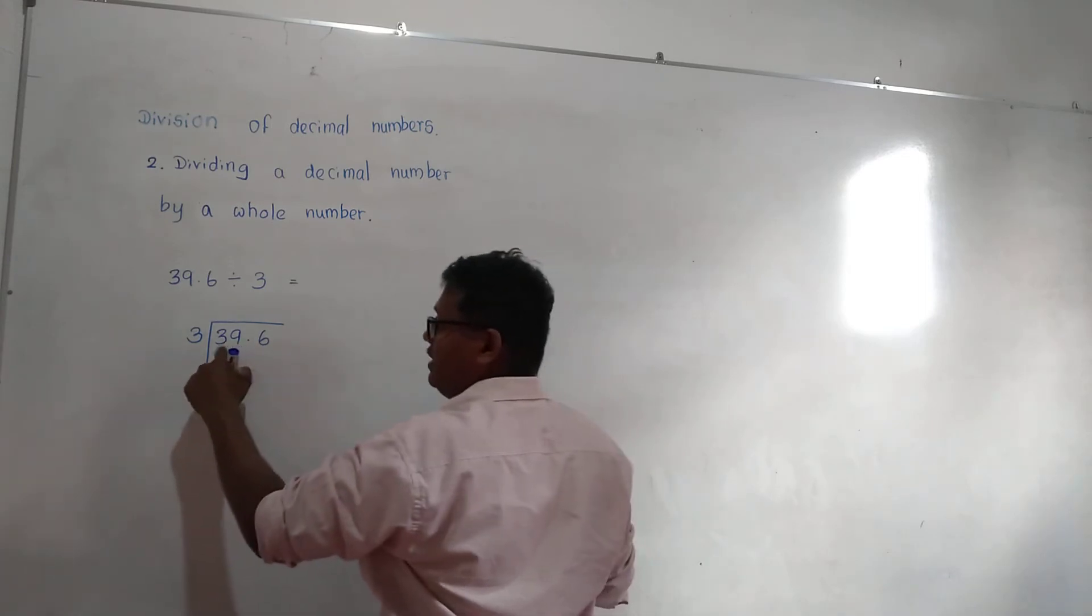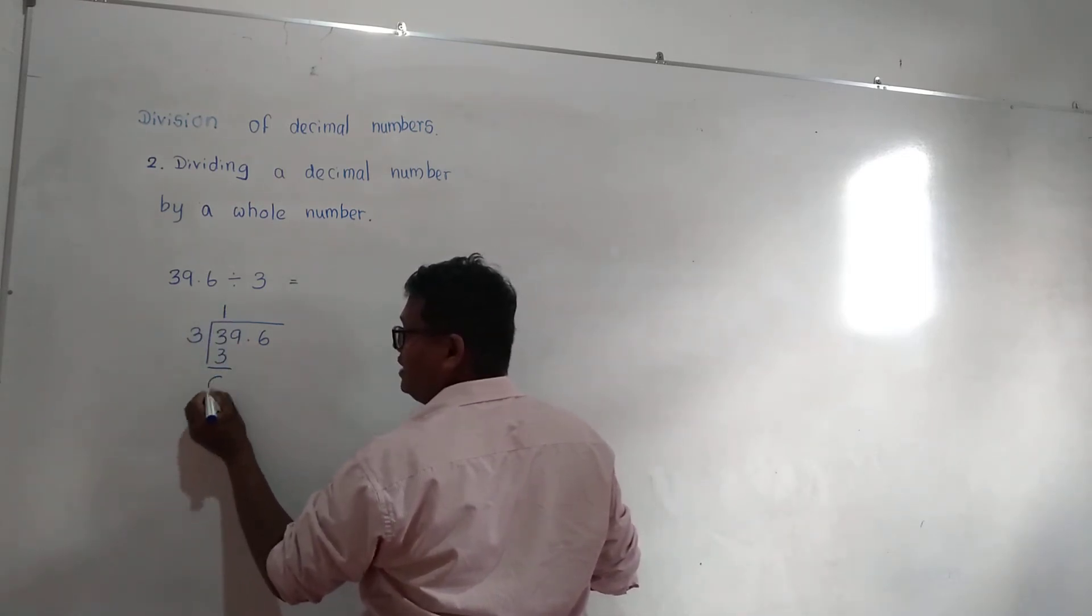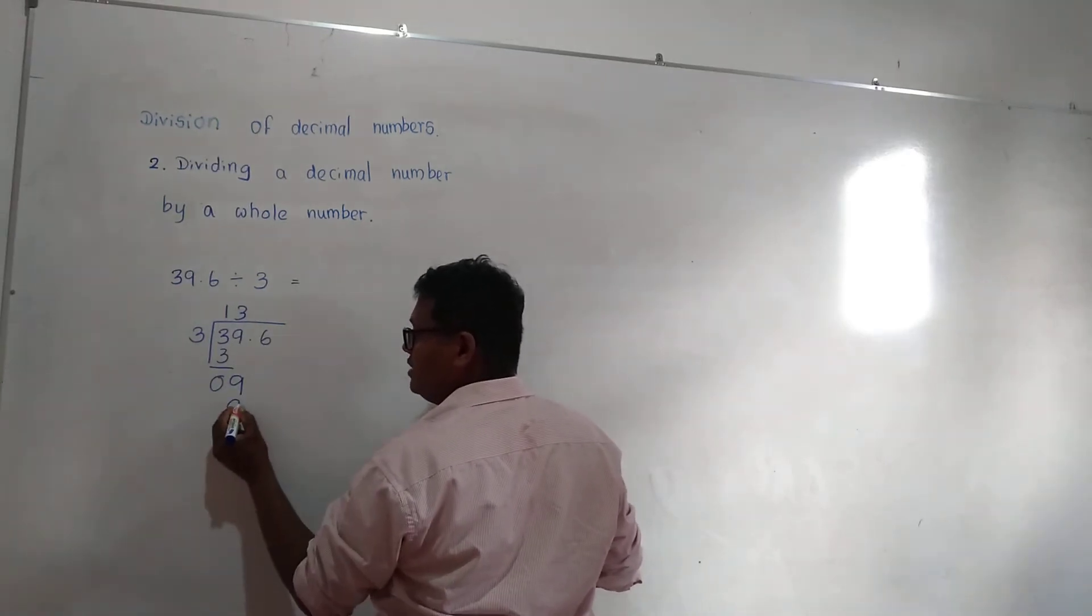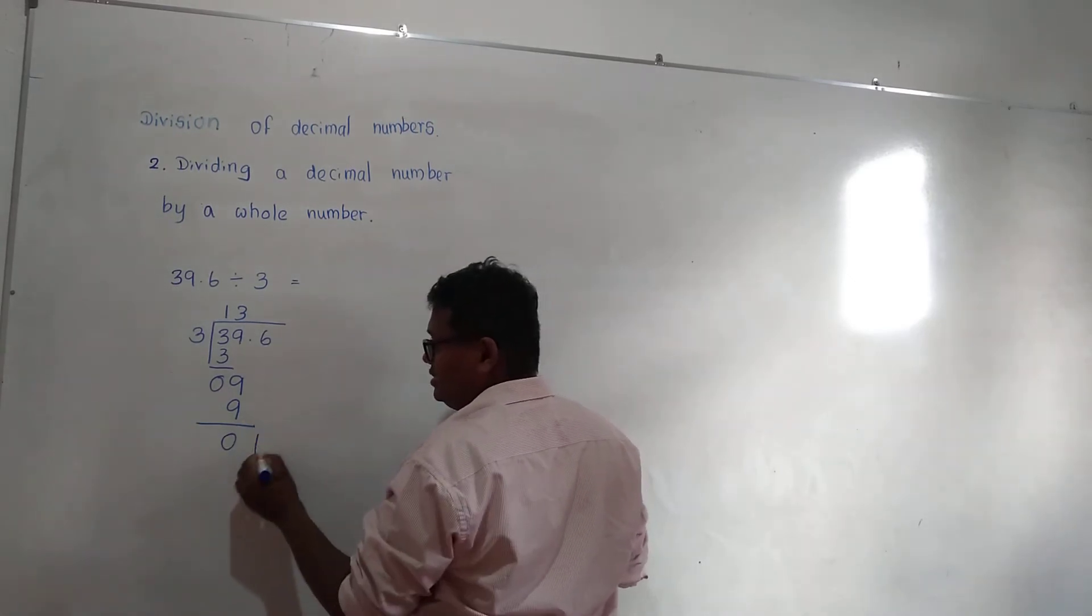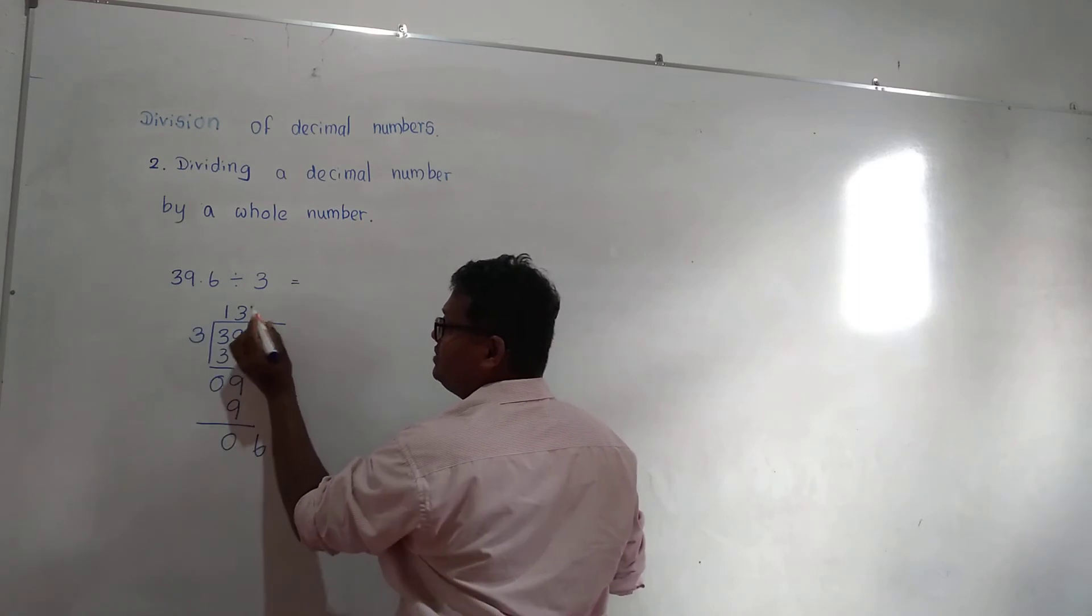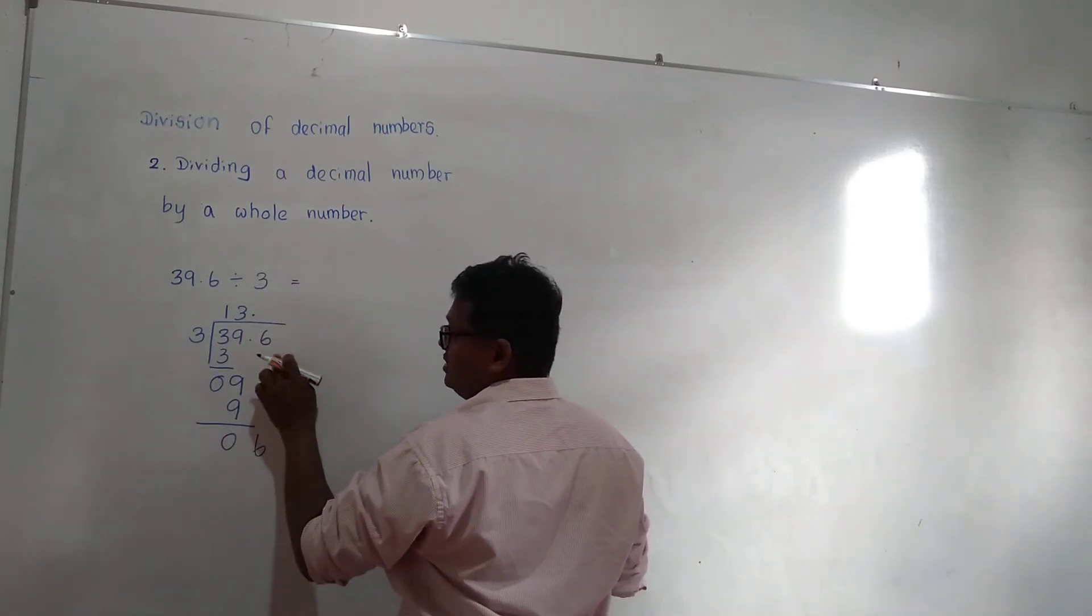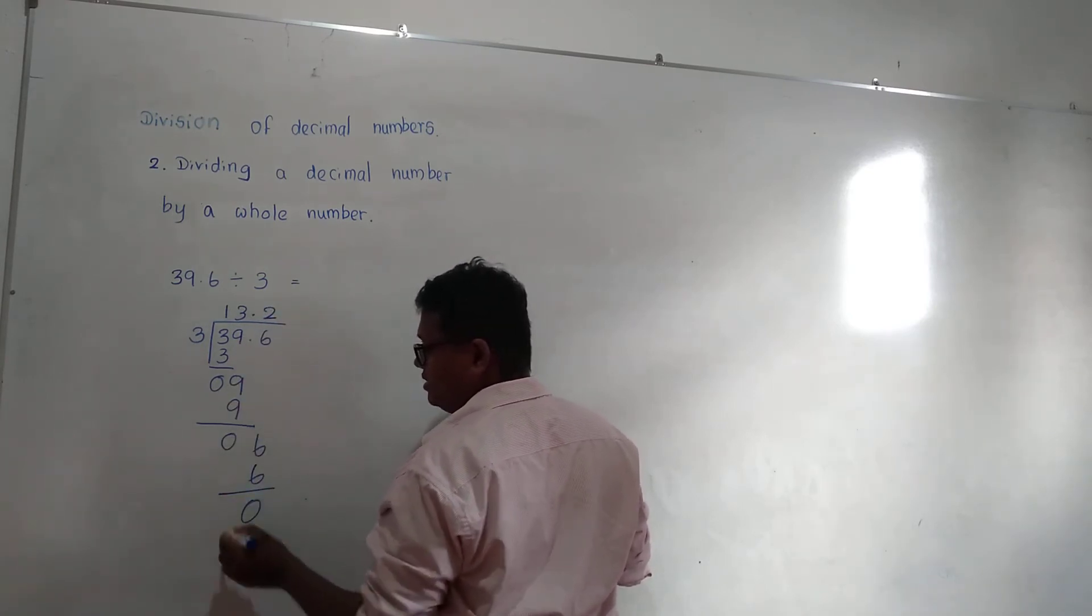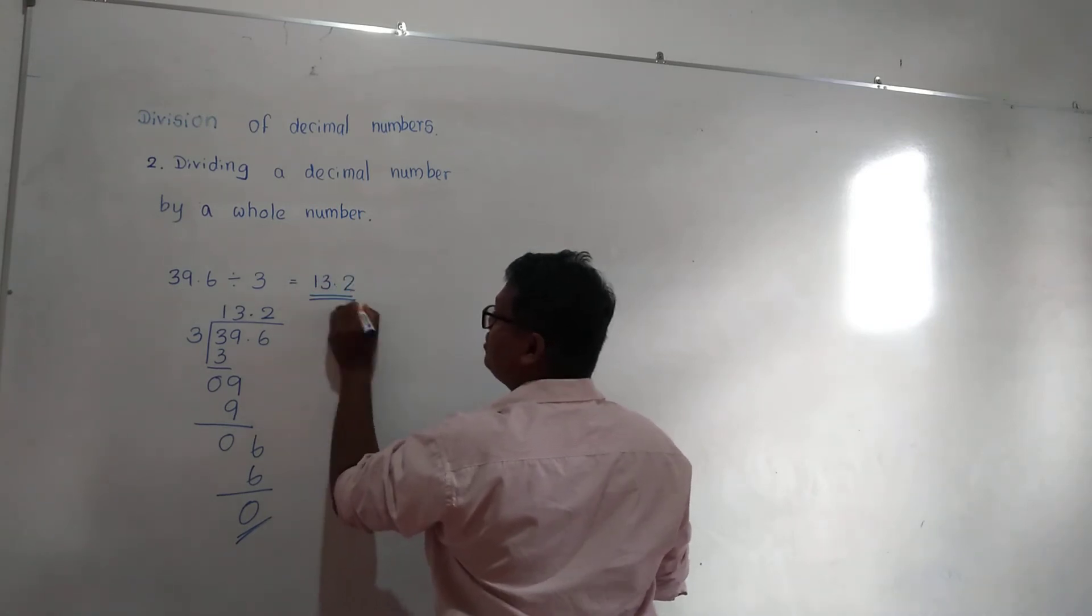How to divide: 3 divided by 3 is 1. 3 times 1 is 3, remainder 0. Get this 9: 9 means 3 times 3 is 9, remainder 0. Get this 6: you can put the decimal point above the decimal place. 6 means 3 times 2. 3 times 2 is 6, remainder 0. The answer is 13.2.